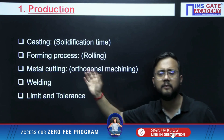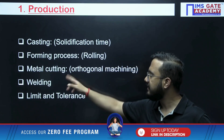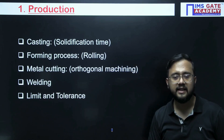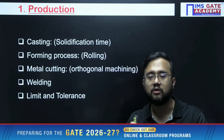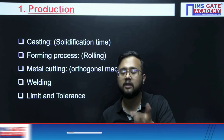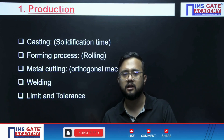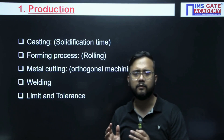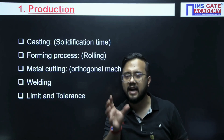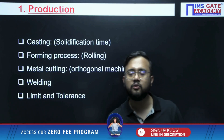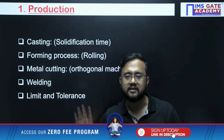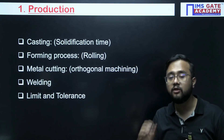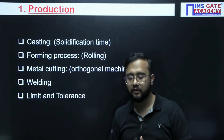Then, Forming Process — the most common question is from the rolling process. Then Metal Cutting and orthogonal machining. Welding numericals are there. Then, Limit and Tolerance numericals. These are the topics in production from which you can expect direct numericals. Production is not a theoretical subject — mostly in the GATE examination, numericals will be coming. GATE is a numerical-oriented paper. They will give you a situation with some data that you need to analyze and conclude with a final answer. You need to know the concept in depth to analyze the given situation.